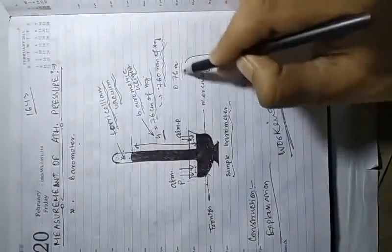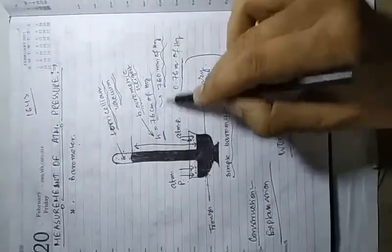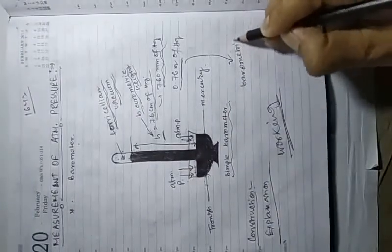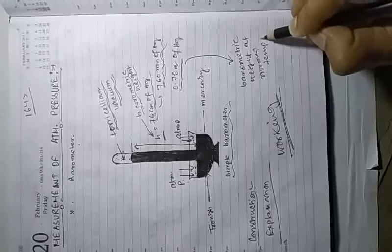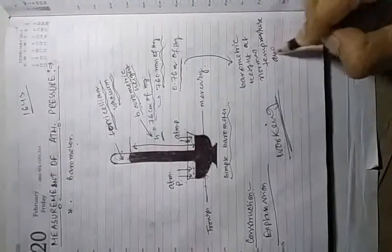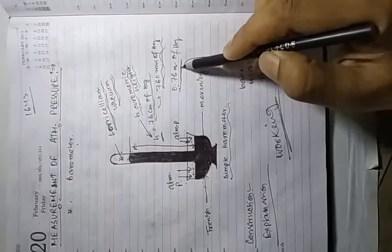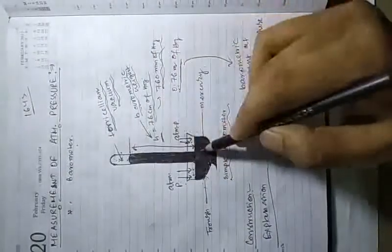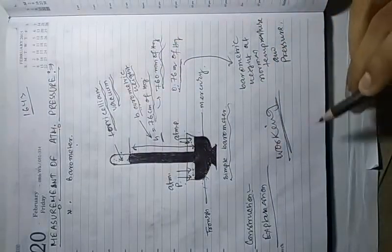The barometric height is 760 mm or 0.76 meters of Hg. At normal temperature and pressure — around 25 degrees Celsius — the barometric height is 0.76 meters, or 760 millimeters, or 76 centimeters of Hg.